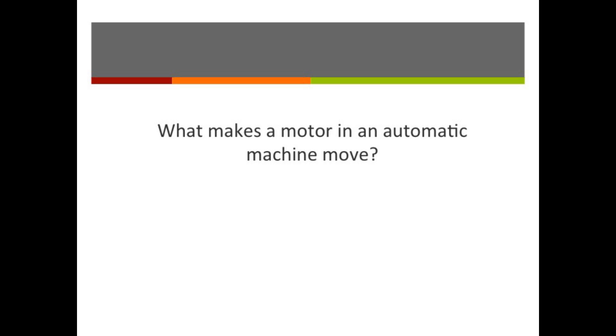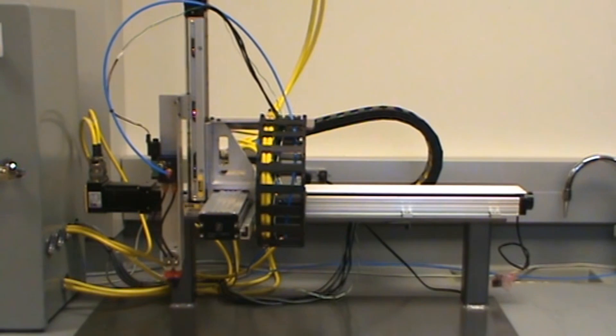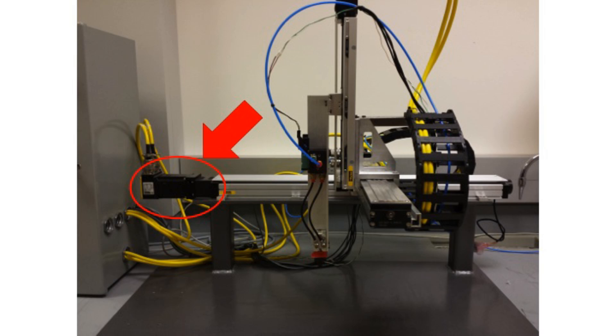So how do we tell a machine how fast to go? The answer is math. Look at how this machine moves from left to right. The motor in the machine is what makes it move.